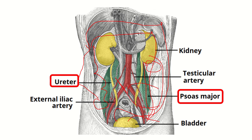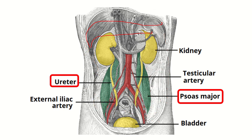From this, we need to find a structure present at the lower part of the psoas major muscle. Here we can see the psoas major muscle — tracing along, this is the psoas major muscle on the left side and right side.